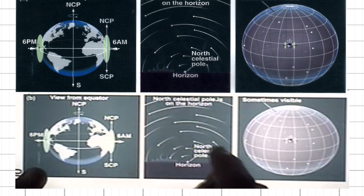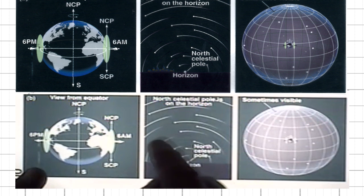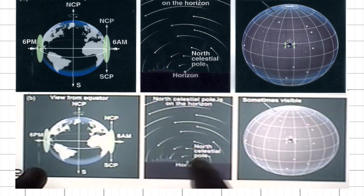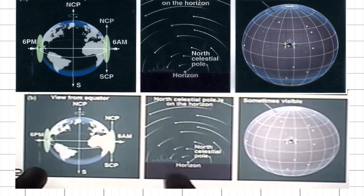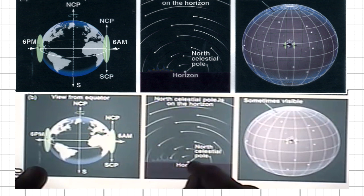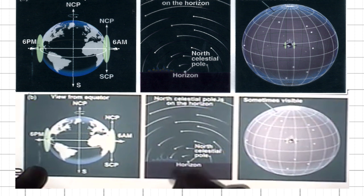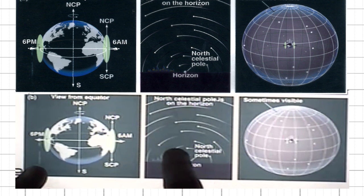As a result, all of them would rise and set. There are no stars that are visible at all times. No matter how close it is to the pole, the star will always rise and set. There are no circumpolar stars.